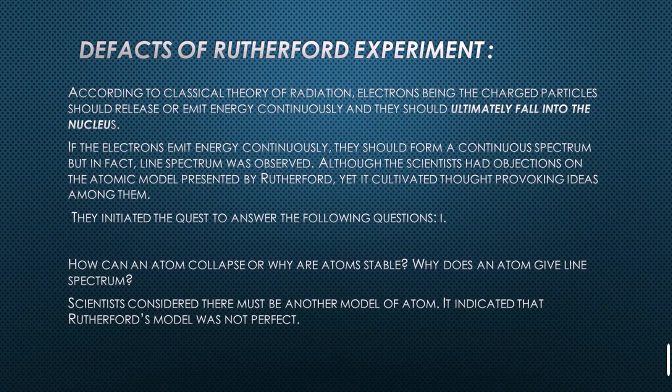There were successes but also defects in the Rutherford experiment. He proved that the plum pudding theory was not right, but there were also mistakes in his model. According to the classical theory of radiation, electrons, being charged particles, should release or emit energy continuously. They should ultimately fall into the nucleus. Rutherford stated that electrons revolve around the nucleus, but at a certain time they should fall into it and atoms should be destroyed.